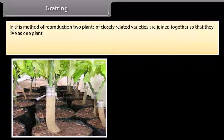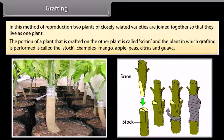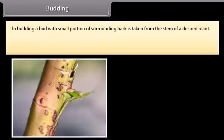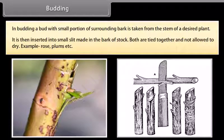Grafting: In this method, two plants of closely related varieties are joined together so that they live as one plant. The portion of a plant that is grafted onto the other plant is called the scion, and the plant in which grafting is performed is called the stock. Examples include mango, apple, pear, citrus, and guava. Budding: In budding, a bud with a small portion of surrounding bark is taken from the stem of a desired plant. It is then inserted into a small slit made in the bark of the stock. Both are tied together and not allowed to dry. Examples include rose and plums.